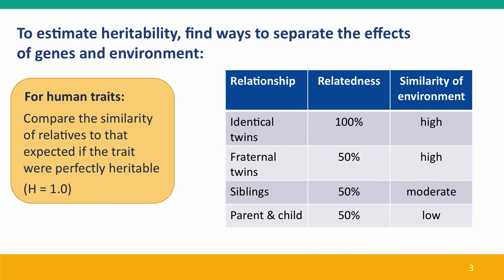To estimate heritability, as I described in the previous lecture, we need to find ways to separate the effects of genes and environment. And in humans, that's best done by looking at the similarity in phenotype of people with different levels of relationship: identical twins, fraternal twins, siblings, and parents and children.